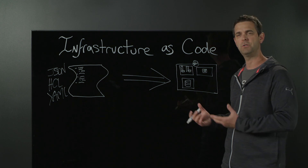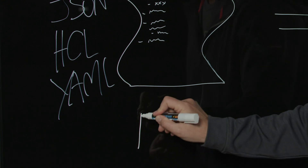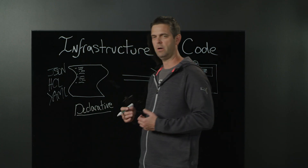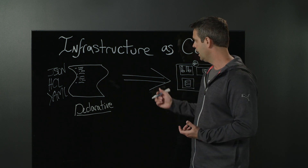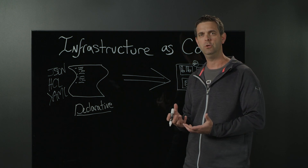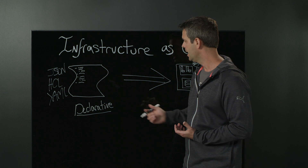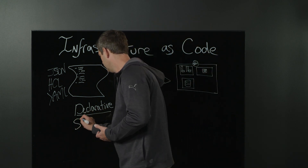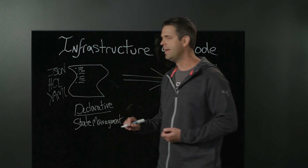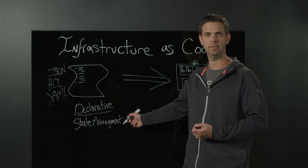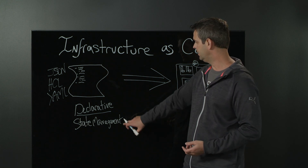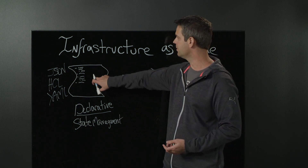We're going to talk about two different types of infrastructure as code. The first one is called declarative. With declarative infrastructure as code, we declare what it is we want, and the interpreter uses that information to construct the result in the most effective way possible. That gives us things like state management — when we create something using infrastructure as code, our tool is aware of the existing state. If we change the configuration, it won't affect any existing resource we haven't altered; it simply adds or deletes resources based on what we've added or deleted in our code.